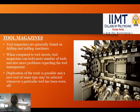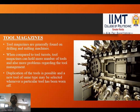In an ATC, tool magazines are used to store various types of tools. Tool magazines are generally found on drilling and milling machines. Compared to tool turrets, a tool magazine can hold a greater number of tools, though this also brings more challenges regarding tool management. Duplication of tools is possible, and a new tool of the same type may be selected whenever a particular tool has worn out.